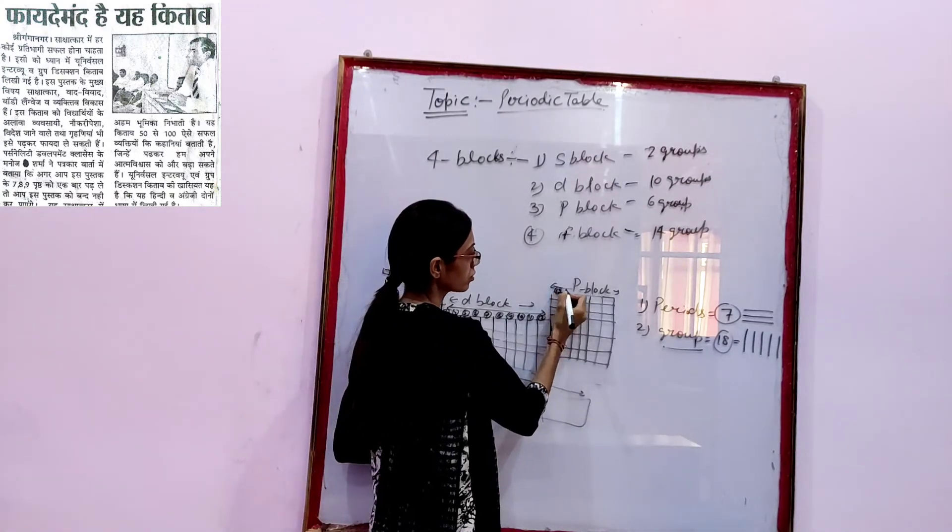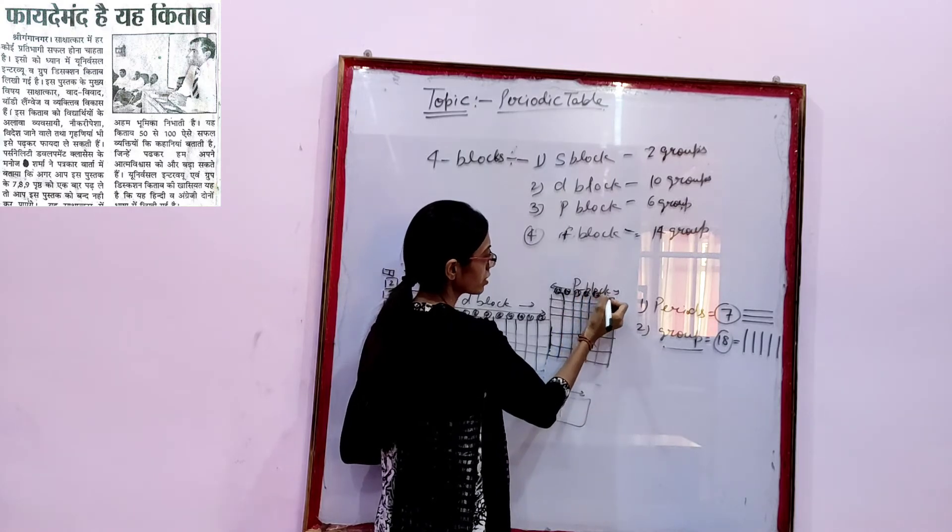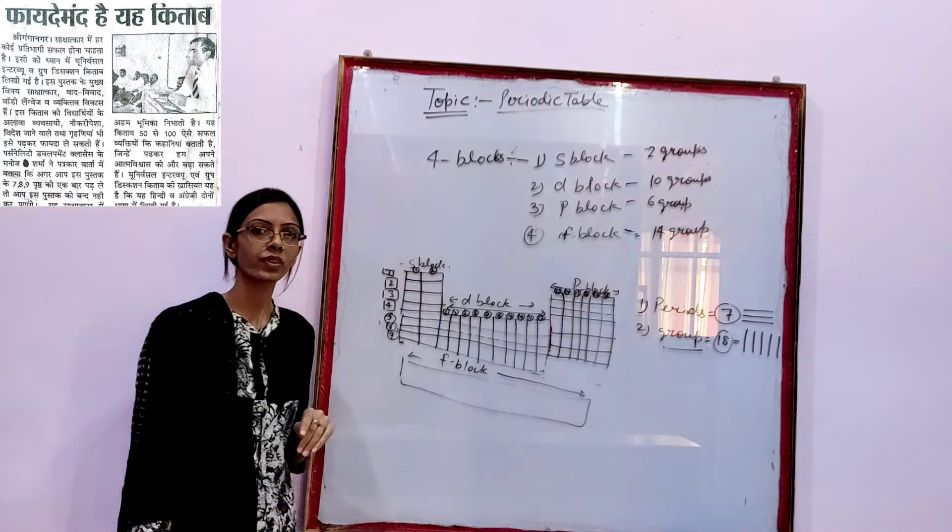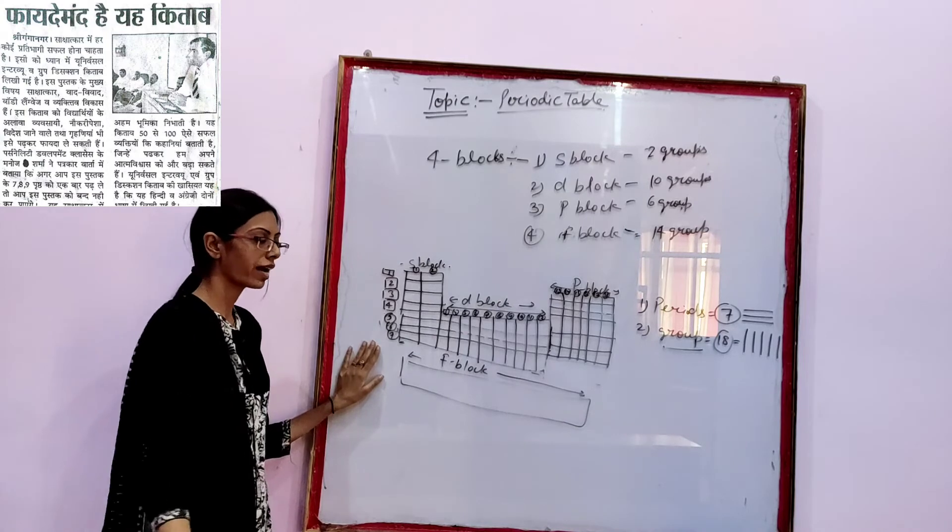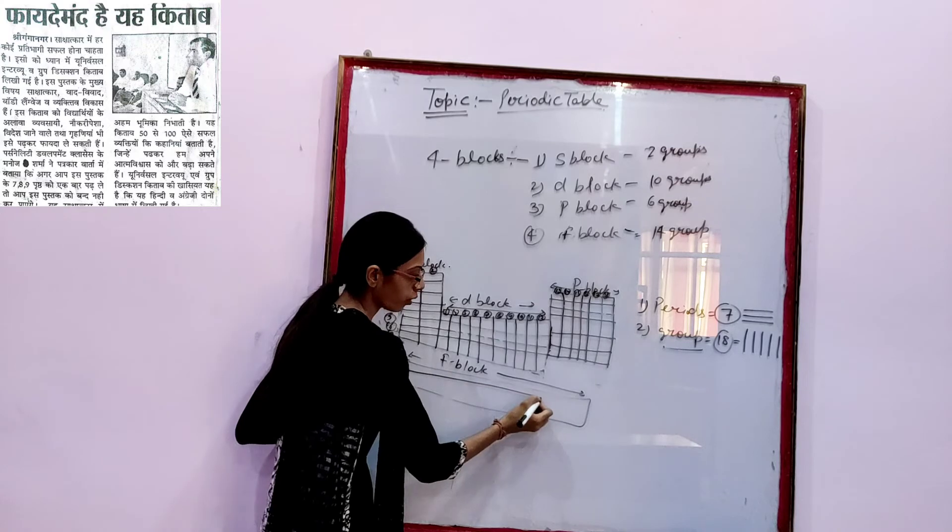You can name them also 13, 14, 15, 16, 17, and 18, right? Now, again as it is, we will divide F block. We have 2 periods in F block.